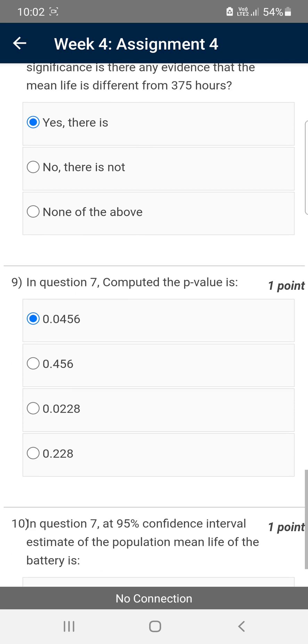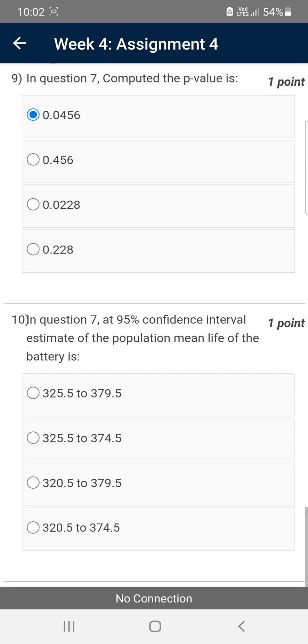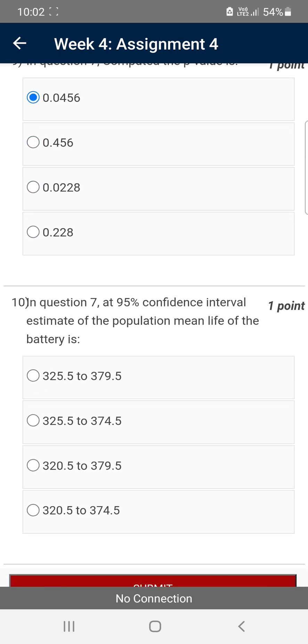Moving on to the final question of this assessment, that is the tenth question. In question seven, at 95% confidence interval, estimate of the population mean life of the battery is—they are asking at 95% confidence interval, the estimation of mean life of the population of the battery. For the tenth question, the probable solution is the second option: 325 to 374.5.